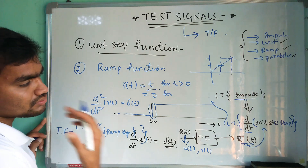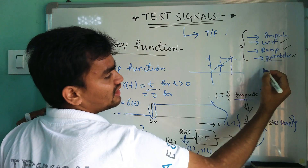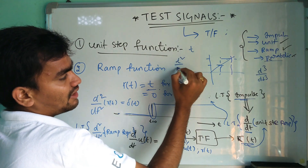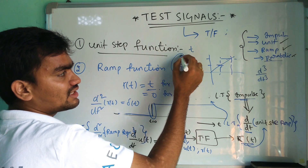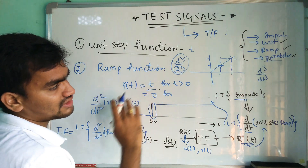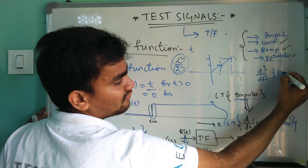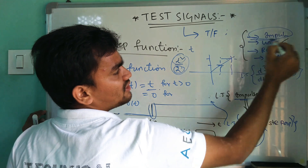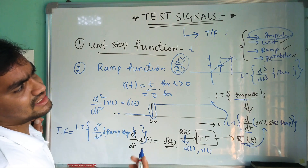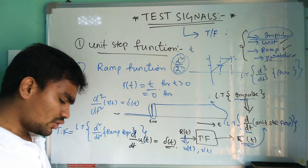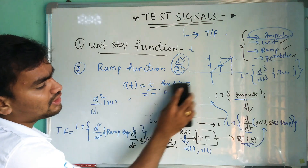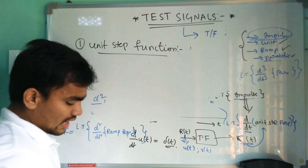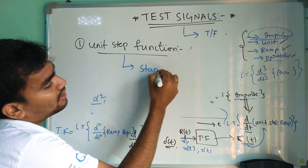Similarly, for the parabolic function, if you differentiate three times, that is d³/dt³, you obtain the transfer function. The parabolic function is written as y equal to t²/2. The factor of 2 in the denominator is to avoid constants — when you differentiate, the 2s cancel and you get a clean result. So if you differentiate the parabolic response three times and take the Laplace transform, you obtain the transfer function.